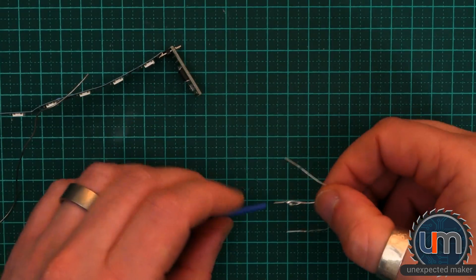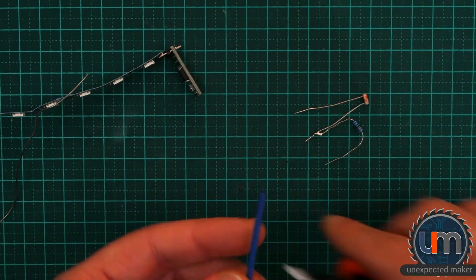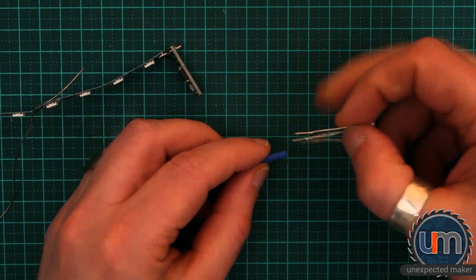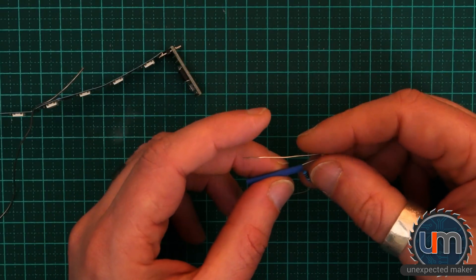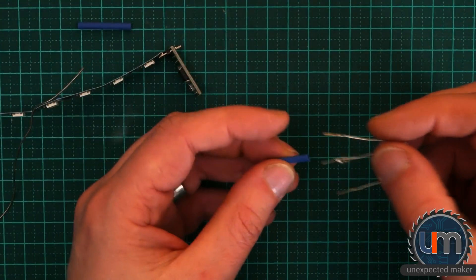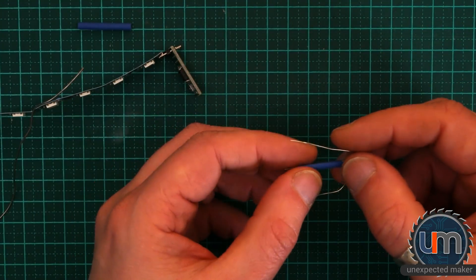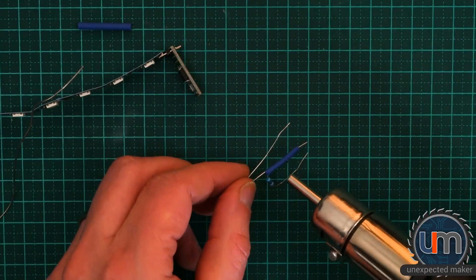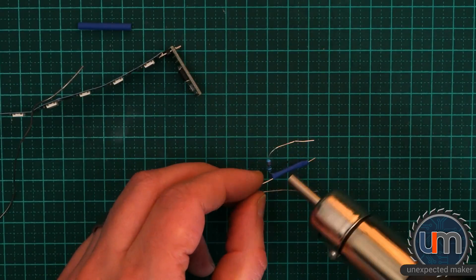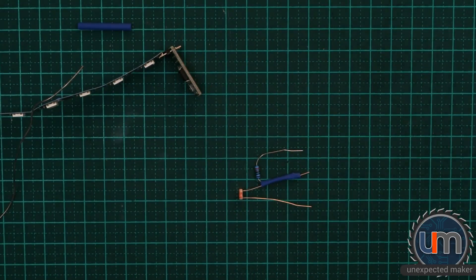I'm going to just stick some heat shrink on. I don't need a lot of it. So probably half this amount. Still too much. Maybe this end. There we go, that's pretty good. I'm just going to get my hot air. Awesome. Just for a bit of protection.